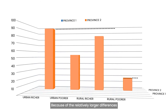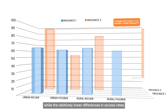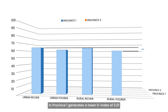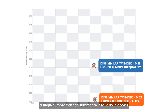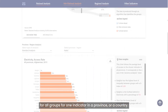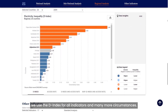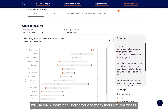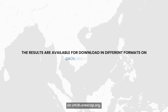Because of the relatively larger differences in access rates across the groups in province two, we have a higher D-Index value. Here we can see our D-Index provides a single number that can summarize inequality in access for all groups for one indicator in a province or a country. In our LNOB online tool, we use the D-Index for all indicators and many more circumstances. The results are available for download in different formats on LNOB.unescap.org.